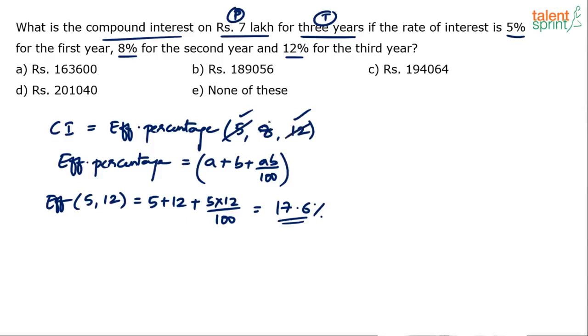So we have got 17.6. So basically 5 and 12 can now be neglected. We have got 17.6 percentage. Now you have to take the effective of 17.6 percentage along with 8. What is the formula? Same formula. A plus B plus AB by 100. So 17.6 plus 8 plus 17.6 into 8 upon 100. Now see this calculation has to be done. If you say I cannot do this calculation, it is complex, then try the formula. Formula is even more complex.